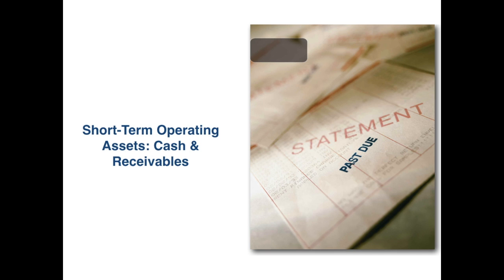Hi everyone. We are continuing forward with short-term operating assets — cash and receivables. In this video we're looking at the second allowance for doubtful accounts method: the aging of accounts receivables, which is the second allowance method allowed by GAAP for estimating accounts receivable we won't collect. The first one, covered in the previous video, was the percent of sales method.